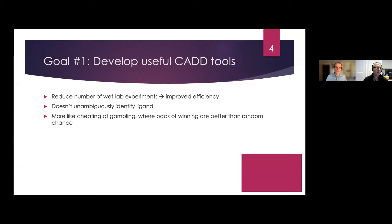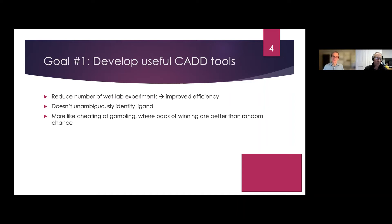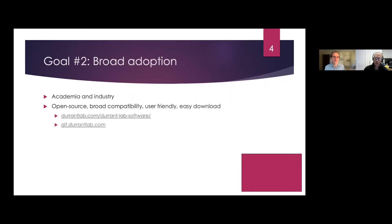With these tools we don't unambiguously identify a ligand such that experimental validation is unnecessary. I think some people oversell these techniques. The way I see it, it's more like cheating at gambling — you're not guaranteed to win, but you're much more likely to win than based on random chance. These tools recommend a set of molecules that are much more likely to have true ligands among them than a random set of compounds would.